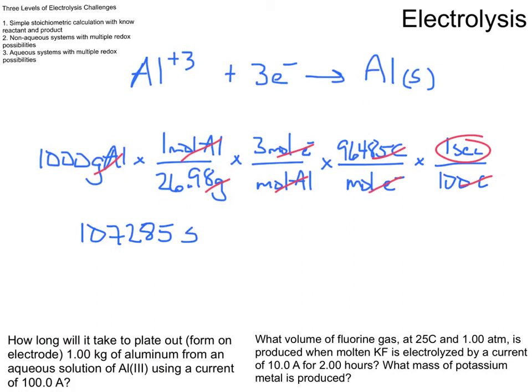And maybe we convert that into something that's a little bit more useful. And with a little bit of care to sig figs, that's about 29.8 hours. So in a little bit longer than a day, you can make a kilogram of aluminum from an aqueous solution of aluminum 3+ if you're passing 100 amps through it.